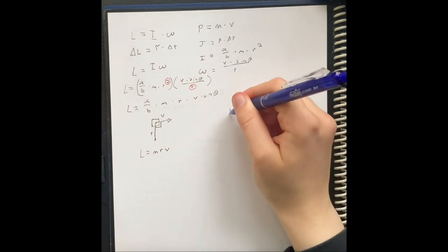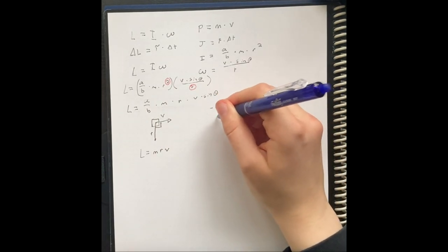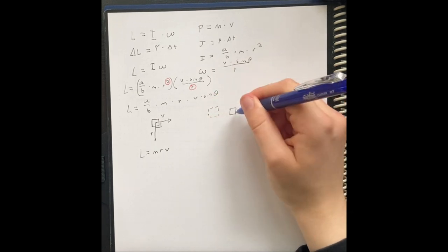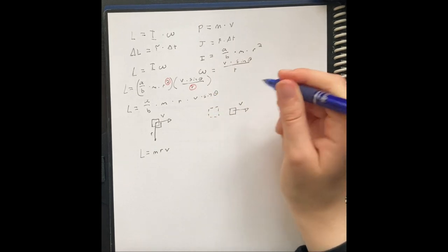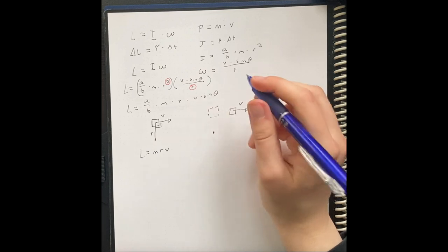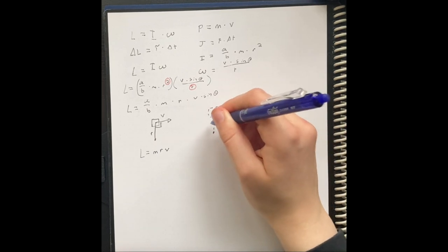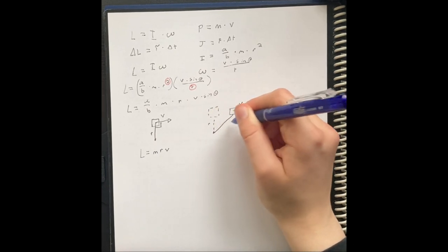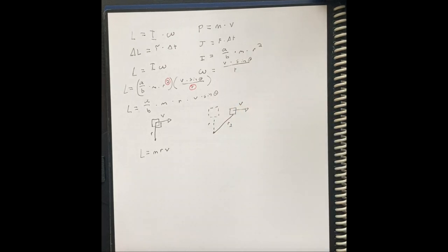But what if this block moves? Used to be here, now is over here. Here's the velocity vector. We cannot move the pivot point. So now, we have a new radius. I call it r2. How do we figure out what r2 is?